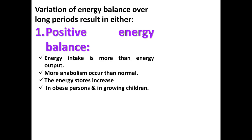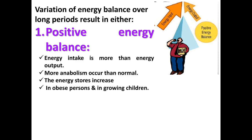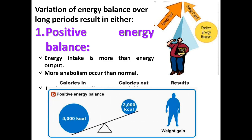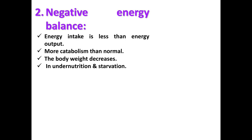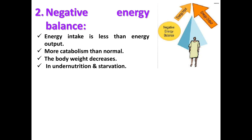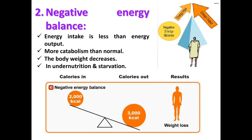Variations of energy balance over long periods result in either positive or negative energy balance. Positive energy balance means energy intake is more than energy output; more anabolism occurs, so energy stores increase — as in an obese person with increased fat store, or in a growing child with increased protein store. Negative energy balance means energy intake is less than energy output; energy stores are catabolized, and body weight decreases as in under-nutrition and starvation.